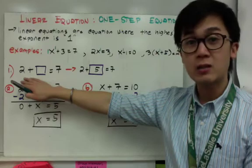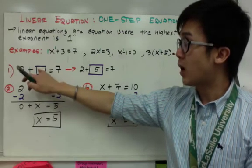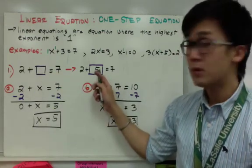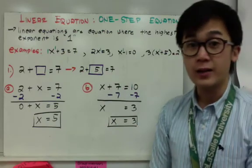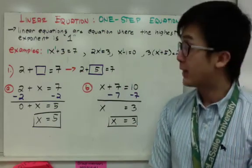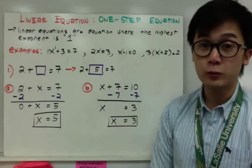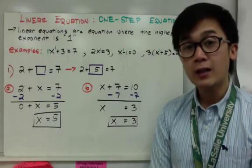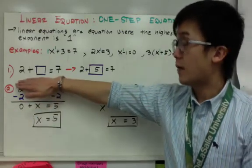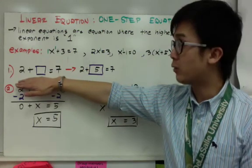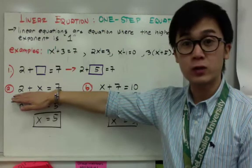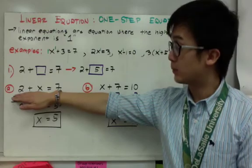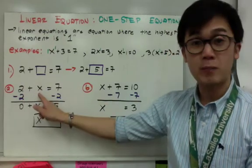To complete the equation, you need to think of a number to fit inside the box that makes it equal to 7. We know we just need to put 5 in the box, so 2 plus 5 equals 7. In algebra, we don't use boxes; we use variables like x, y, z, and other letters. So we translate this to 2 plus x equals 7, and our goal is to solve for x, meaning we need x by itself.